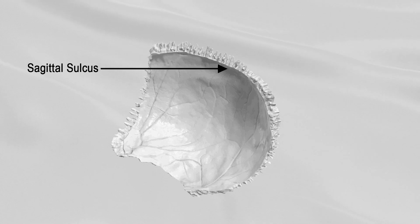Along the upper margin is a shallow groove, which, together with that on the opposite parietal, forms the sagittal sulcus.